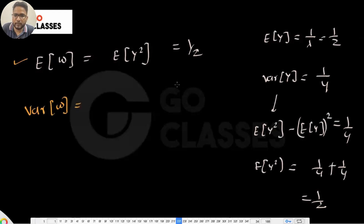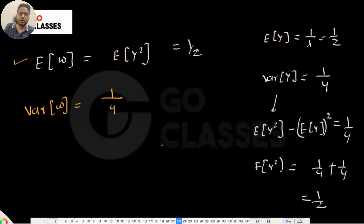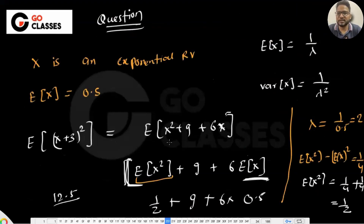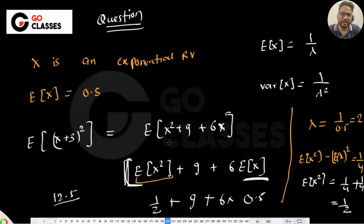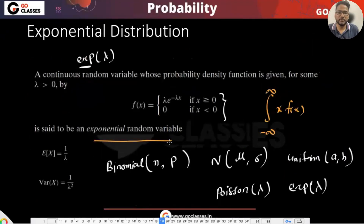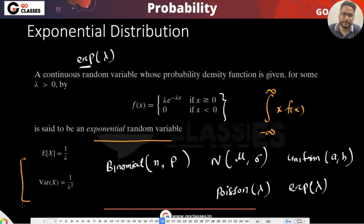Now let's find variance of W. The variance is 1/lambda squared, so it is 1/4. In the exponential distribution, the only real trick they can ask is how to calculate E[X²] — they give you E[X], from which you find lambda, then variance, then use that to find E[X²]. You need to remember expectation = 1/lambda and variance = 1/lambda².